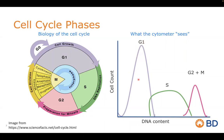Thinking in terms of mammalian cells, the G1 population would be 2n DNA and at G2/M this would be 4n DNA. Anything in between would be somewhere between 2n and 4n, representing cells actively replicating their DNA in S phase.